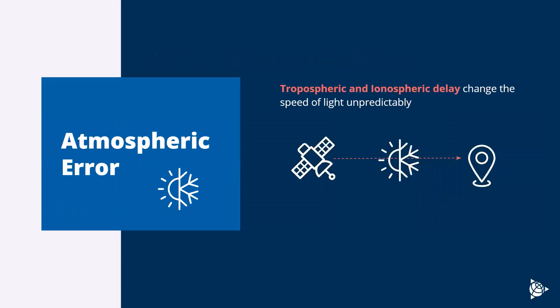In more detail: atmospheric error is the change in the troposphere and ionosphere delay that changes the speed of light unpredictably, due to weather changes. If we're measuring in summer versus winter, there's a big temperature change. Even as clouds move by and cold fronts come in, it changes the density of the atmosphere. The speed of light in a vacuum is a constant, but when measured through a medium like the atmosphere, that speed changes. Because we can't accurately predict the weather, there's going to be an unpredictable change in the speed of light as the signal travels through it, changing the observed measured location we get at the antenna.